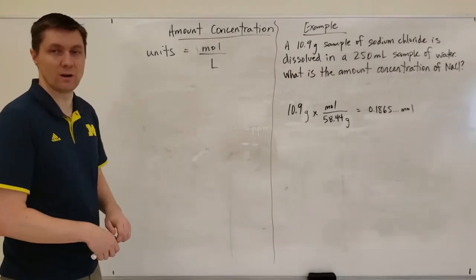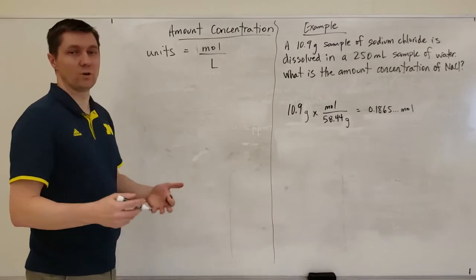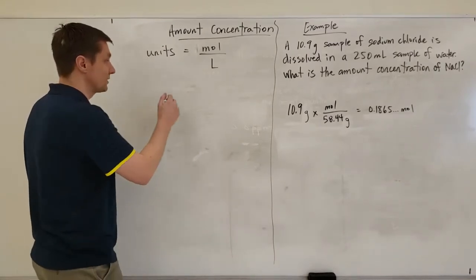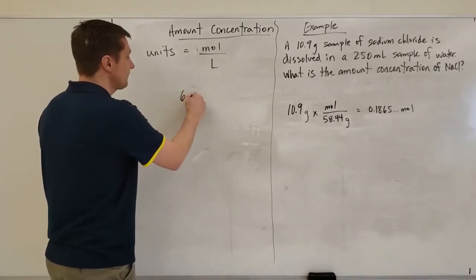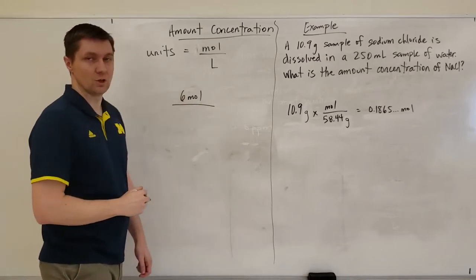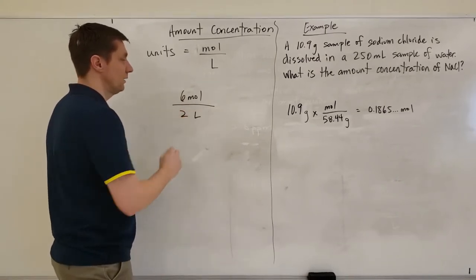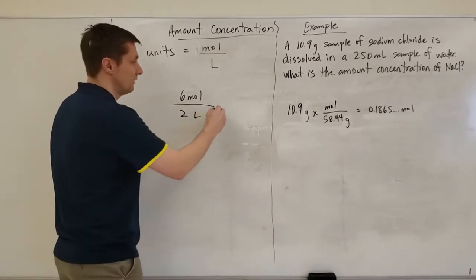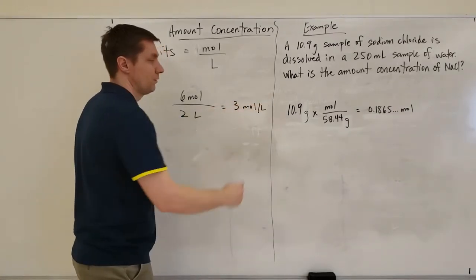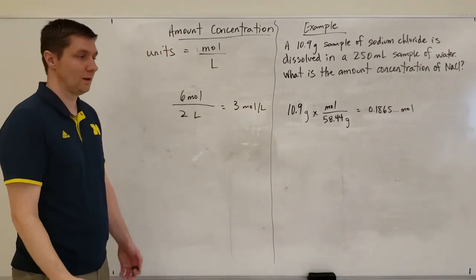If I had, for example, a substance where I had six moles dissolved in two liters of a solvent, then this would give me a concentration of three moles per liter. That's a really simple calculation.